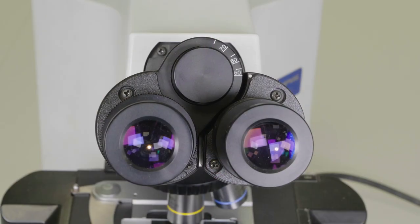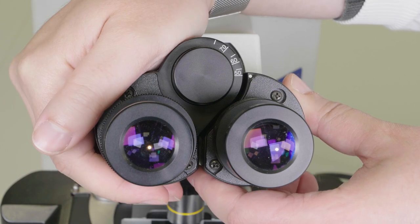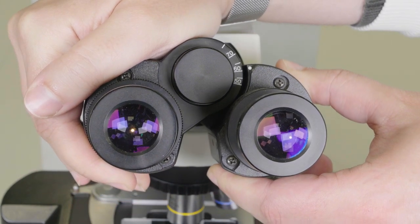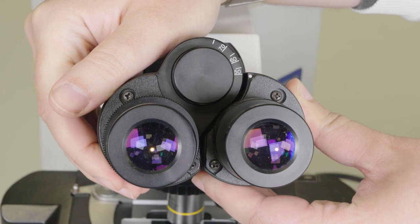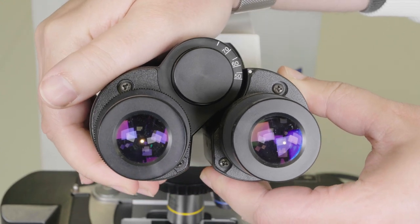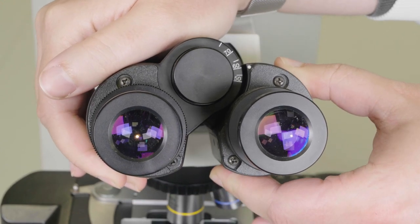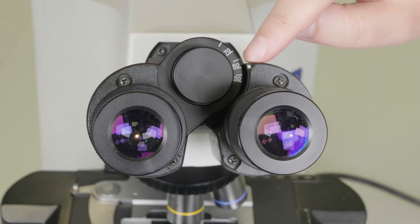Next, we need to adjust the eyepiece. All our microscopes are binocular, so you need to adjust the interocular distance until you can see a single image when looking down the microscope with both eyes. Once you have this distance, note down where the dot is located on the scale so you can quickly set up the microscope for next time.